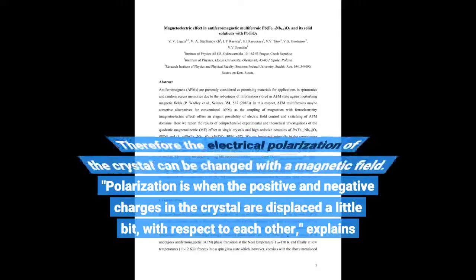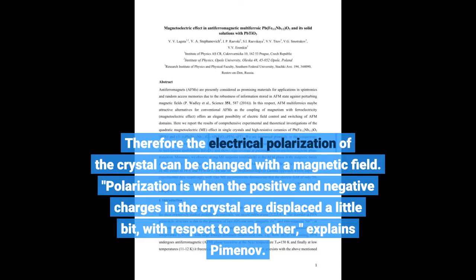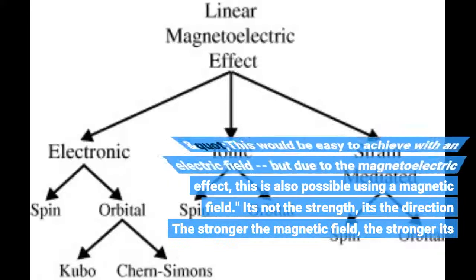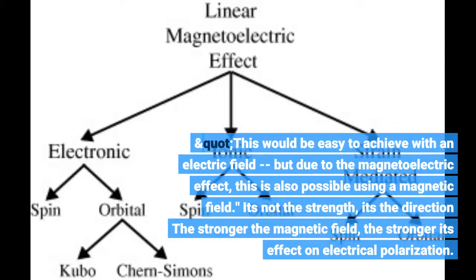Therefore the electrical polarization of the crystal can be changed with a magnetic field. Polarization is when the positive and negative charges in the crystal are displaced a little bit, with respect to each other, explains Piminov. This would be easy to achieve with an electric field, but due to the magnetoelectric effect, this is also possible using a magnetic field.